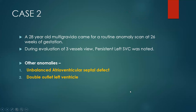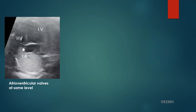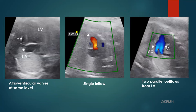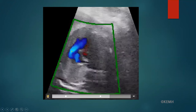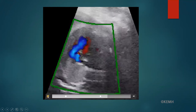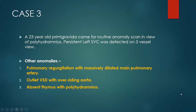Case 2 is a 28-year-old who came for an anomaly scan and PLSVC was noted. This image shows PLSVC and right SVC on either side of the aortic arch. The fetal heart also shows AV valves at the same level, a single inflow, and two parallel outflows arising from the morphological left ventricle, suggestive of unbalanced AVSD with double outlet left ventricle.